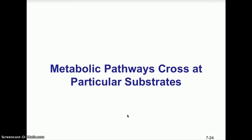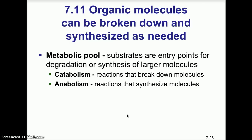To wrap up this chapter: metabolic pathways cross at a metabolic pool. In general, substrates are entry points for degradation or synthesis of larger molecules. There are two basic types of reactions: catabolic reactions and anabolic reactions. A catabolic reaction breaks down molecules — these are our hydrolysis reactions. An anabolic reaction synthesizes molecules — more like dehydration synthesis. To remember the difference: think of anabolic steroids, which cause an increase in muscle mass — so an anabolic reaction builds molecules, while catabolic reactions break them down.